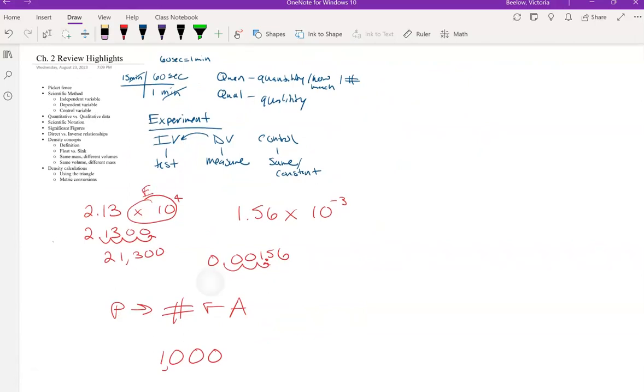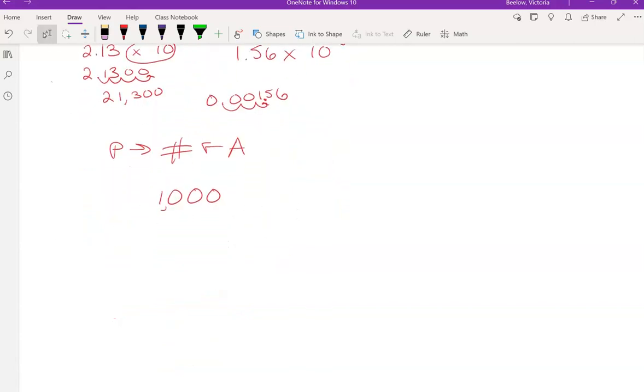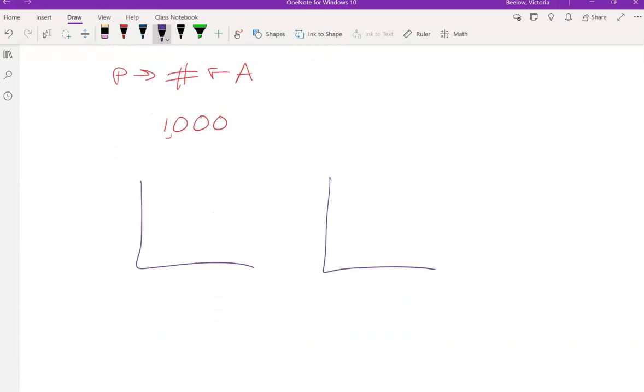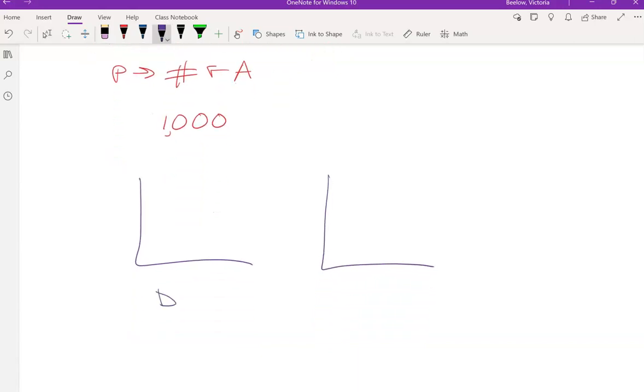And then, lastly, I want to talk about relationships. So, there's two types of relationships. We're going to talk more about these later, a lot. So, a direct relationship on a graph looks like this. Basically, as this variable is increasing, this variable is also increasing. As this variable decreases, this variable also decreases.